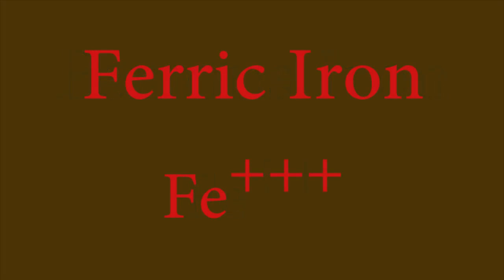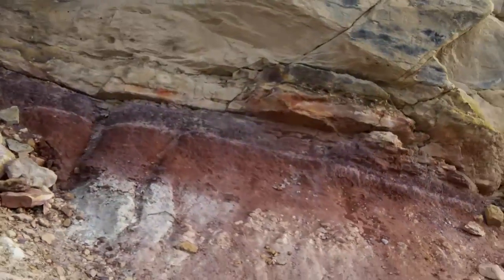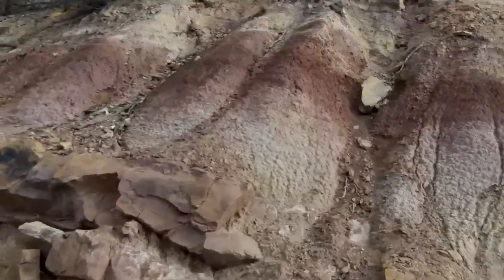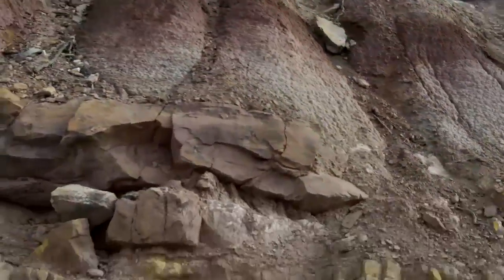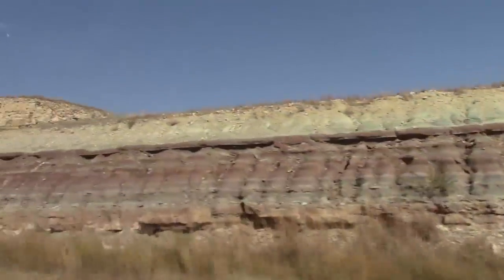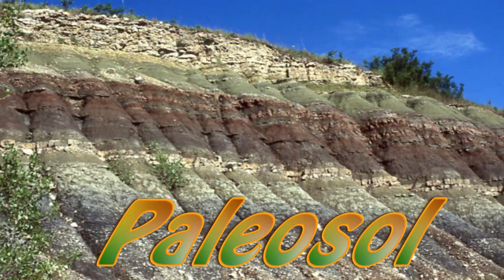With oxygen present, iron is oxidized to ferric iron, which tends to display yellow to red colors. Mudstones with brightly colored greens and reds are most likely to be ancient soil deposits, which we call paleosols.